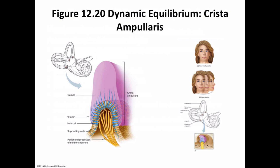Other sensory structures also aid in maintaining equilibrium. Proprioceptors, especially those in the joints of the neck, inform the brain about the position of body parts. Our eyes also detect changes in points of reference resulting from body movements. Visual information is so important that even if the organs of equilibrium are damaged, keeping your eyes open and moving slowly may be sufficient to maintain normal balance.